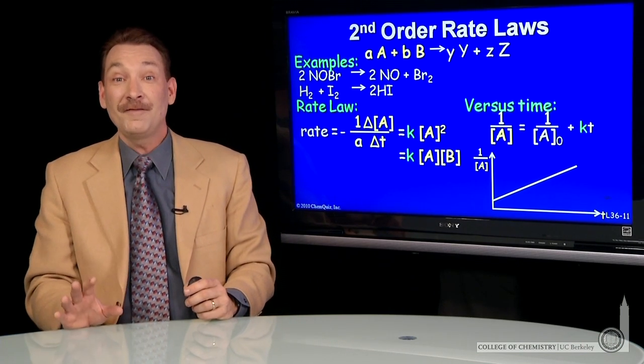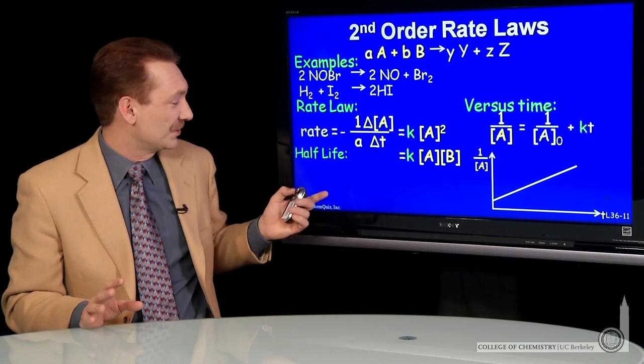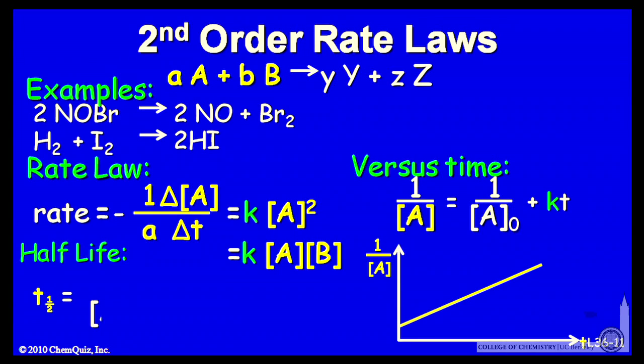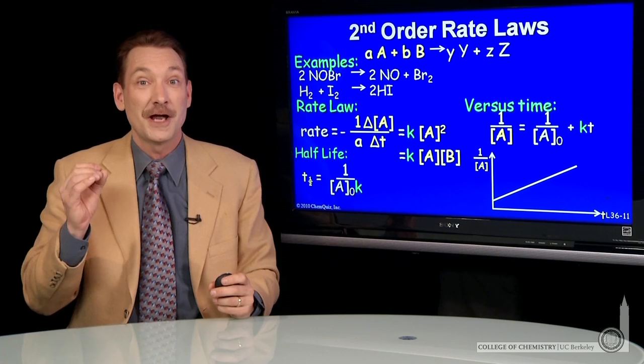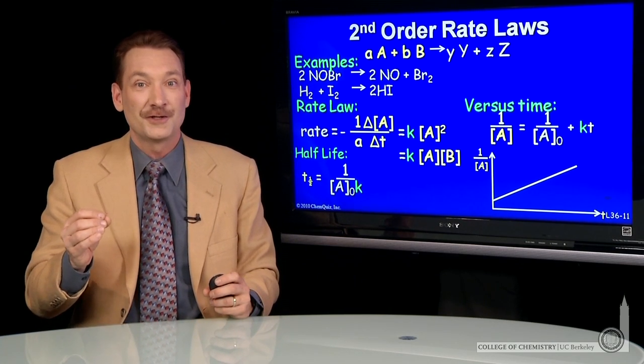Now we can look at the half-life for second order reactions as well. The half-life goes as 1 over the initial concentration times the rate constant. So the initial concentration matters in terms of the half-life.